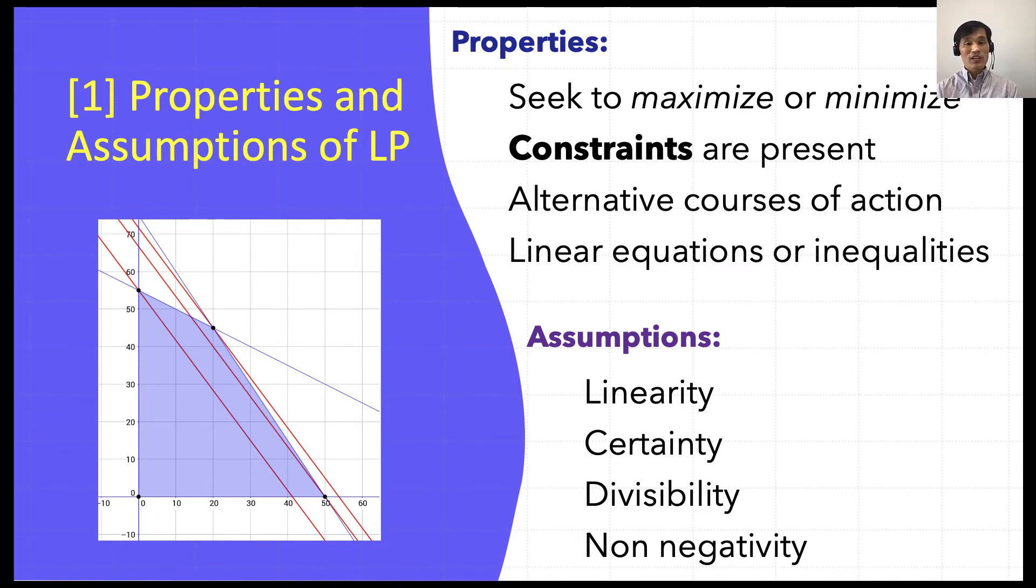Alternative courses of action that this linear programming is seeking for. For example, there are many things that you can do, and among many options, which one is the best? And lastly, linear equations or inequalities. So meaning that you have a limited number or amount of things that you can use. For example, your time is equal to or less than equal to 24 hours. You cannot work more than 24 hours a day because we are constrained in the sense.